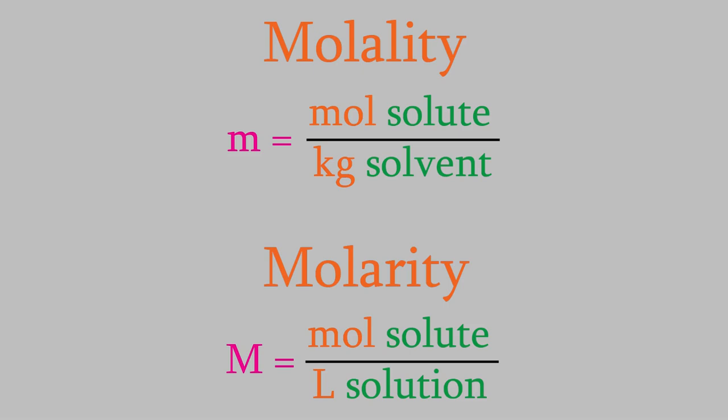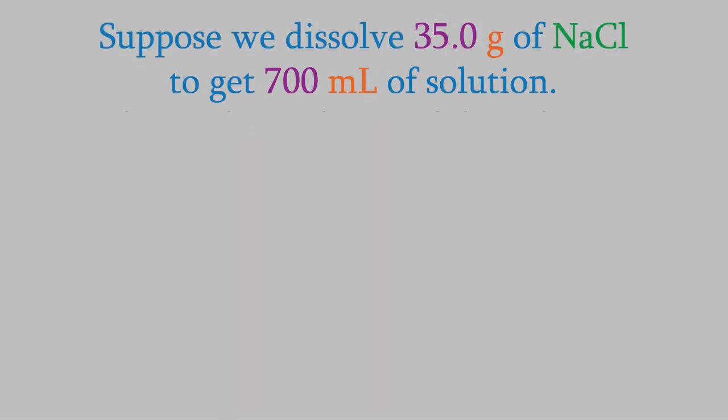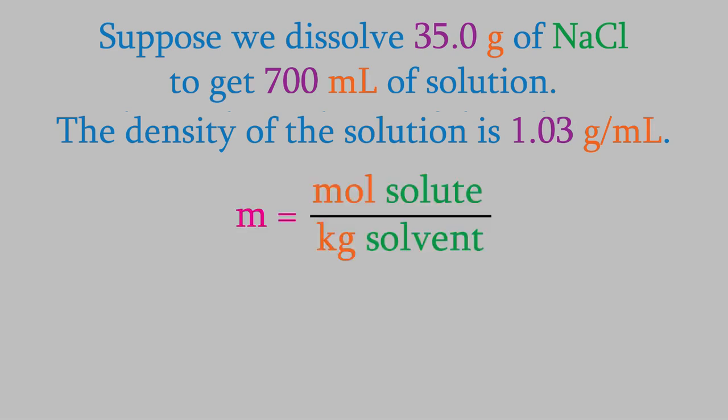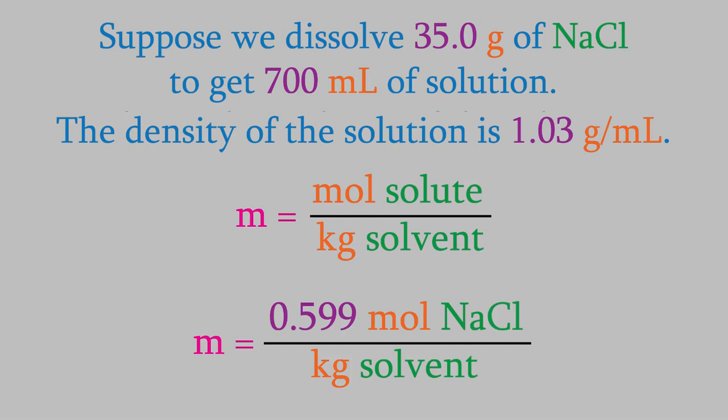Let's determine the molality of the NaCl solution from the previous example. Again, we have 35.0 grams of sodium chloride and 700 milliliters of total solution. We do need one additional piece of information: the density of the solution is 1.03 grams per milliliter. The molality is moles of solute over kilograms of solvent. We already calculated the moles of NaCl — it's 0.599 moles. To get the kilograms of solvent, we'll need to use the density.